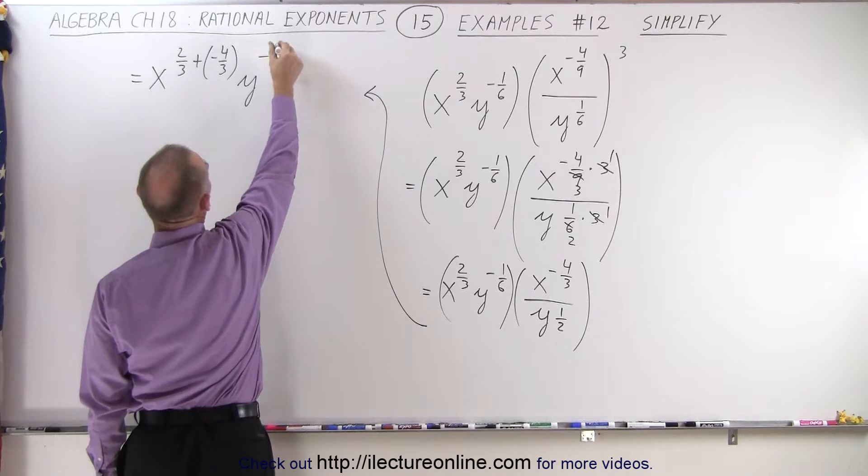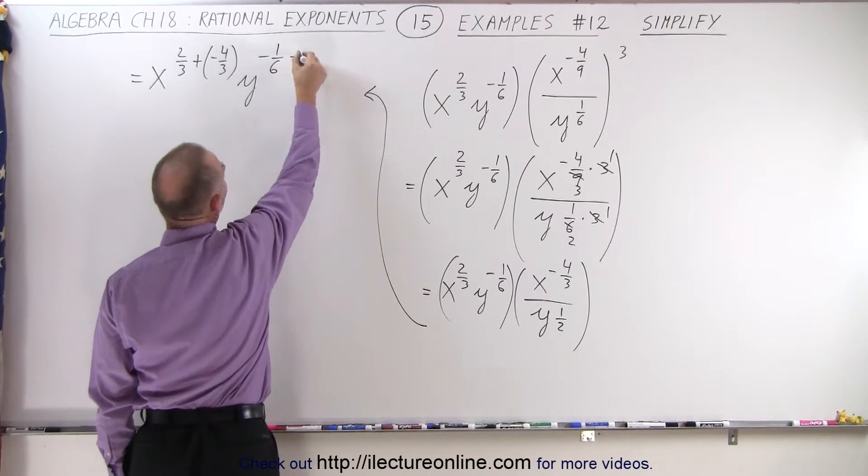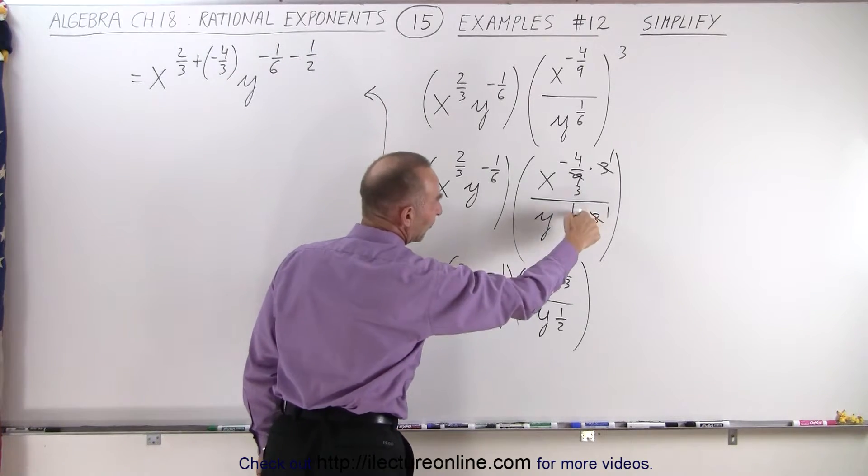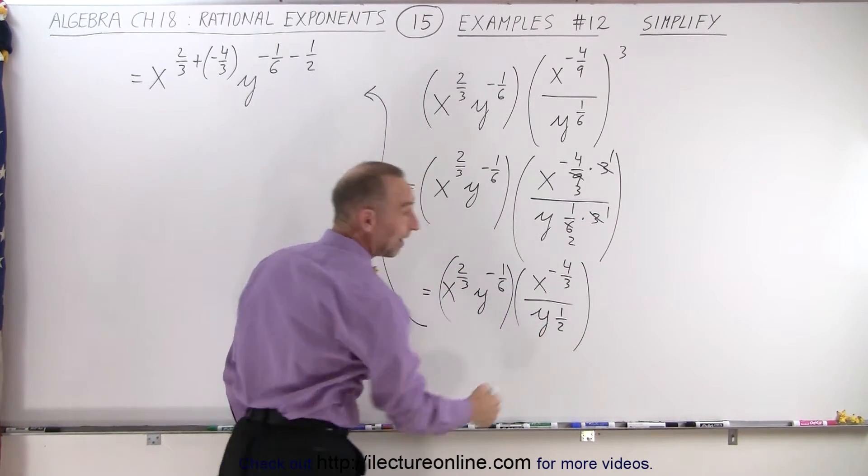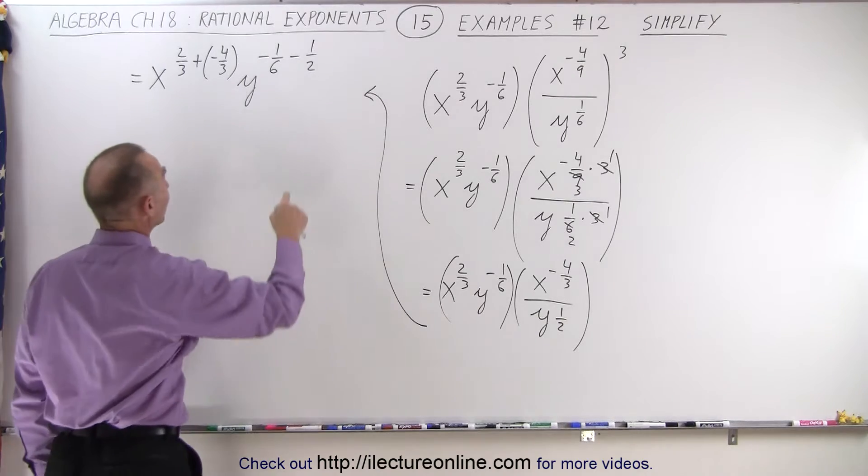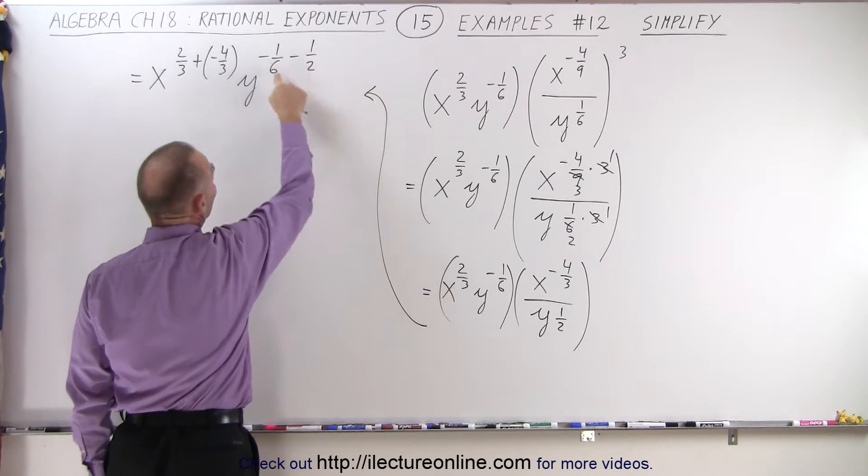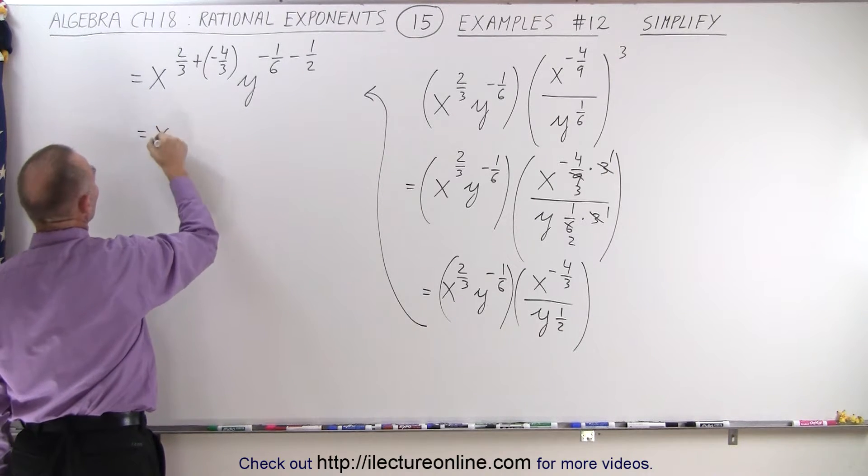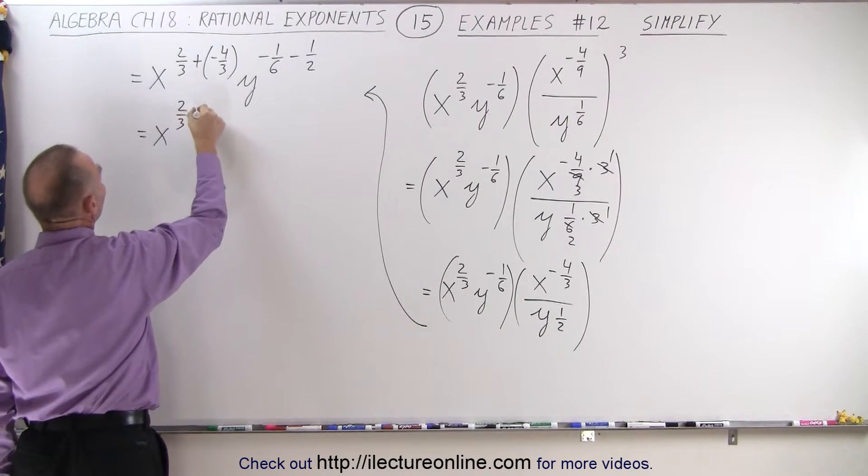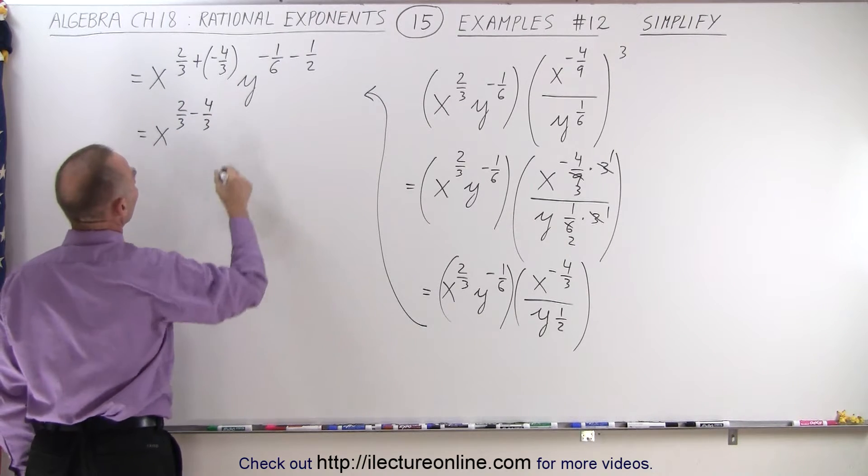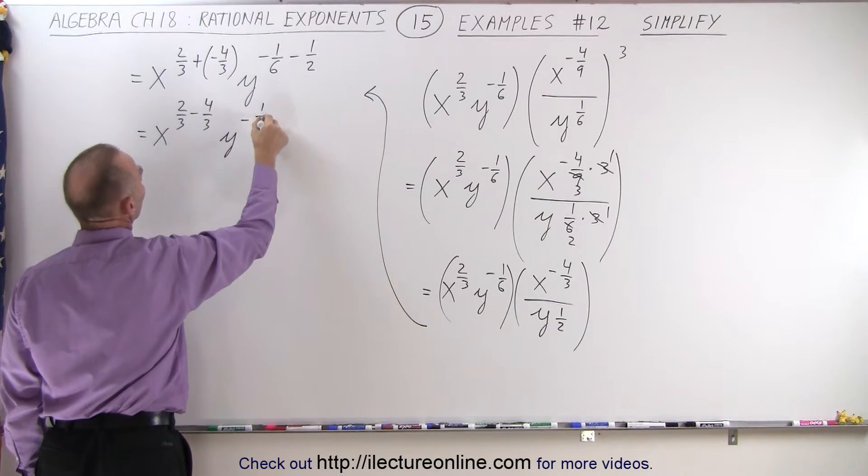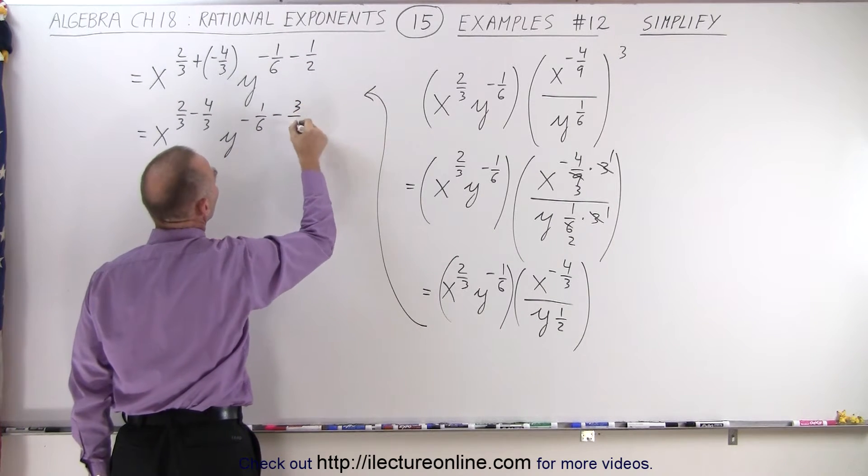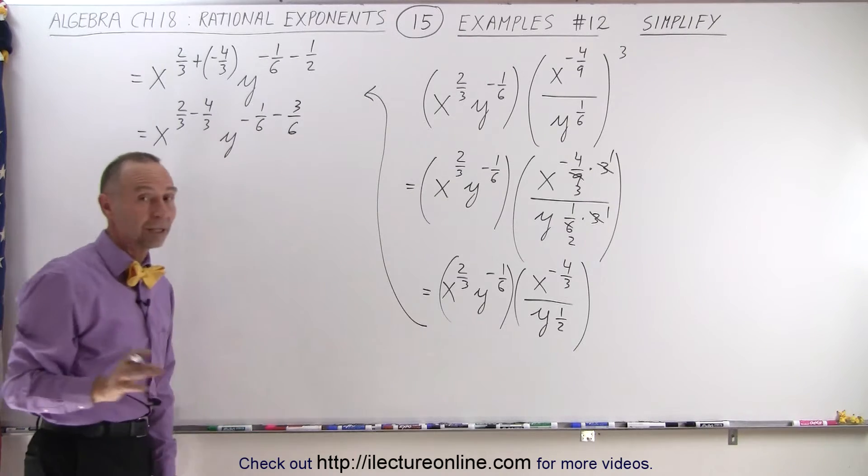so here we get y to the minus one-sixth minus the exponent here, which is one-half. You know, even though I simplified it to one-half, I'm going to have to go back to something over six because I need to be able to subtract those exponents. Okay, here I'm going to rewrite this as x to the two-thirds minus four-thirds. I'm going to get rid of the parentheses, and this is y to the minus one-sixth minus, multiply both the numerator and denominator by three, I get three over six. So now I have the same common denominator.